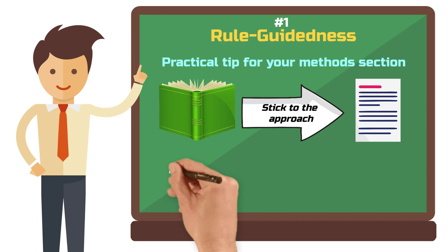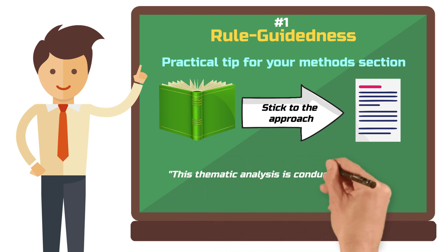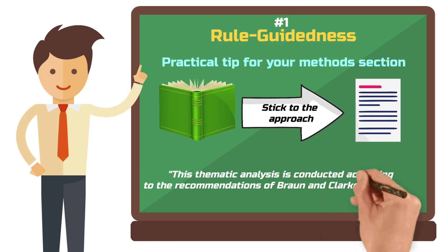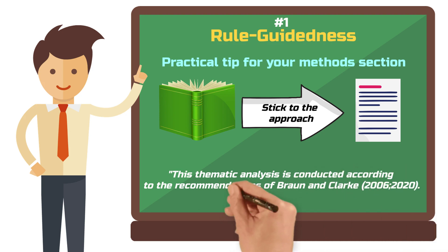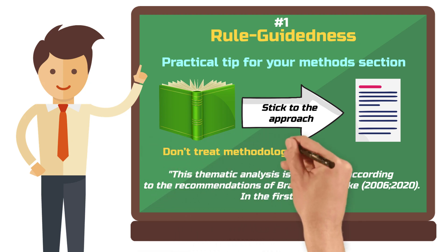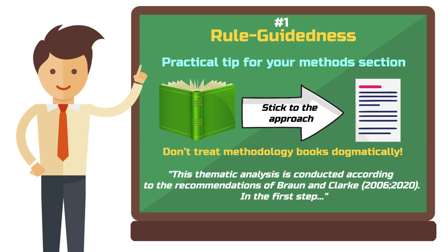In your methods section, you might write something like: 'This thematic analysis is conducted according to the recommendations of Braun and Clarke. In the first step, I did this, and in the second step, I did that.' This doesn't mean you have to follow every methods book from start to finish. Minor adjustments are certainly possible, and being methodologically flexible is a major advantage of qualitative research. However, it would be worthless without rules.